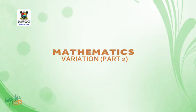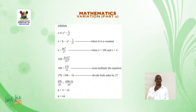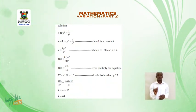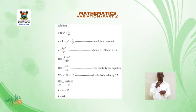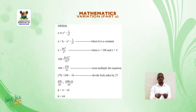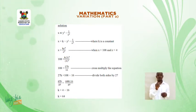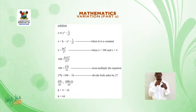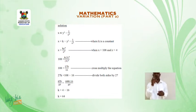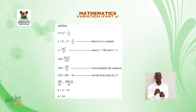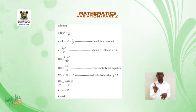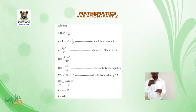You are welcome back. Solution. X varies directly as the cube of Y and inversely as the square of Z. X is equal to K times Y cubed times 1 over Z squared, where K is a constant. Therefore, X is equal to KY cubed over Z squared. When X is equal to 108, Y is equal to 3 and Z is equal to 4: 108 is equal to K times 3 cubed over 4 squared. 108 is equal to 27K over 16.